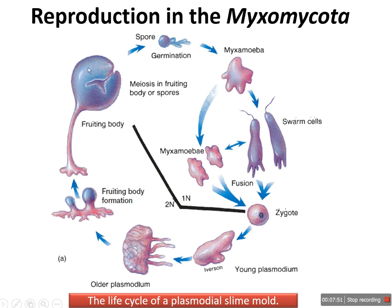Looking at the figure, the life cycle can be explained as follows: the spore under favorable conditions germinates and is converted to myxamoeba. The myxamoeba stage may persist or convert to swarm cells. Fusion of these cells produces a zygote, and from the zygote a young plasmodium is produced, which develops into an older plasmodium. From the plasmodium, fruiting body formation occurs. When the fruiting body matures, spores are released into the surrounding environment by the process of meiosis, ready for germination when they encounter a suitable environment. This completes the reproduction cycle in Myxomycota.